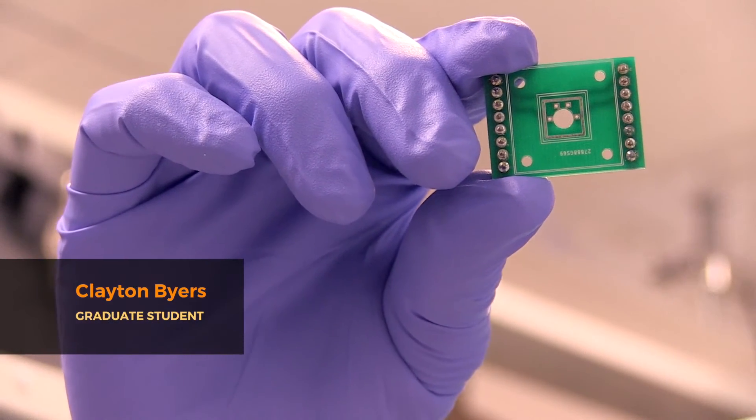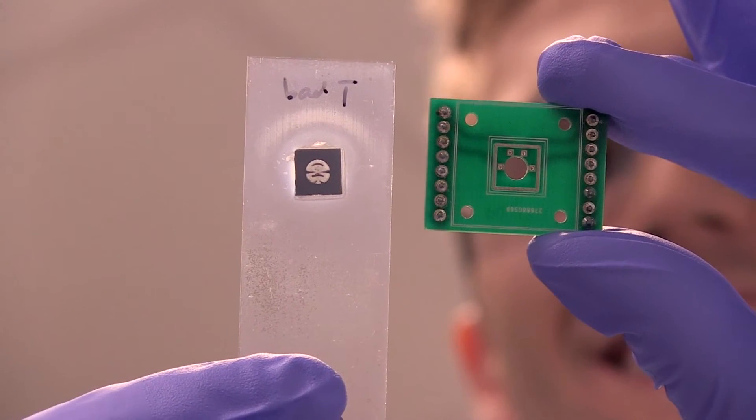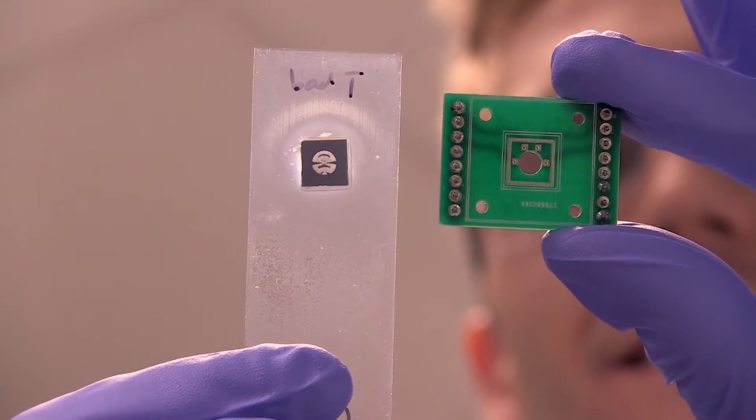And when the flow goes over it, it bends the wire, it stretches it. And we can measure that amount of stretching by passing a current through it.